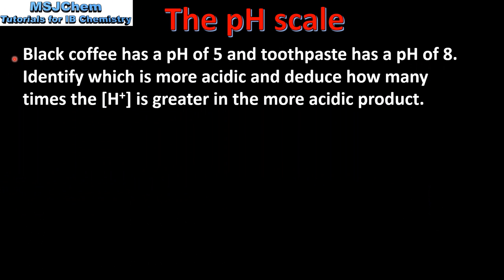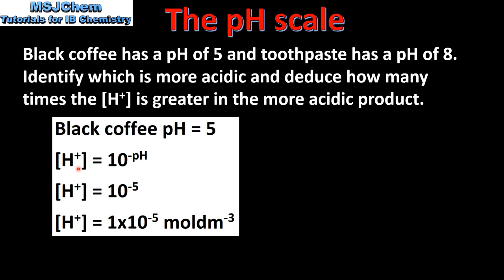Next we look at an example. Black coffee has a pH of 5 and toothpaste has a pH of 8. Identify which is more acidic and deduce how many times the hydrogen ion concentration is greater in the more acidic product. Black coffee has a pH of 5, so the concentration of hydrogen ions equals 10 to the negative pH, which is 10 to the power of negative 5. That gives a hydrogen ion concentration of 1 times 10 to the negative 5 moles per decimetre cubed.